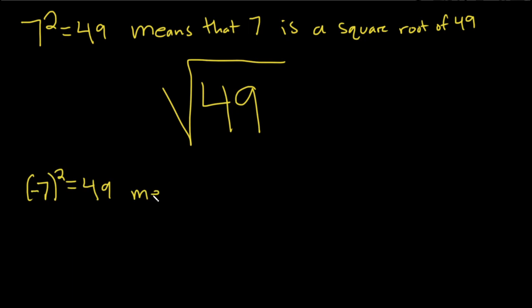And so this also means that negative 7 is a square root of 49.